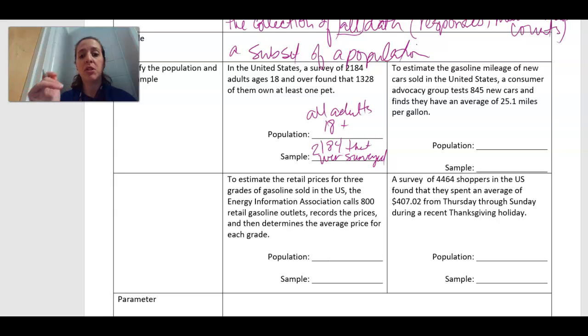This next example: to estimate the gasoline mileage of new cars sold in the United States, a consumer advocacy group tests 845 new cars and finds that they have an average of 25.1 miles per gallon. So again, the population here would be all new cars. You can see how that would be some information that'd be really hard to get, just not a valuable use of anybody's time. So we use the sample of these 845 that were tested.